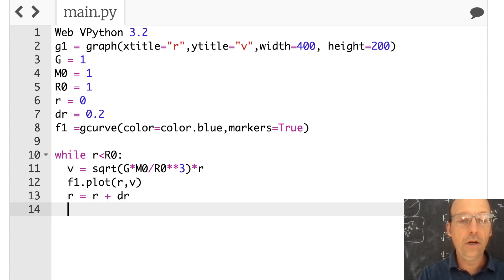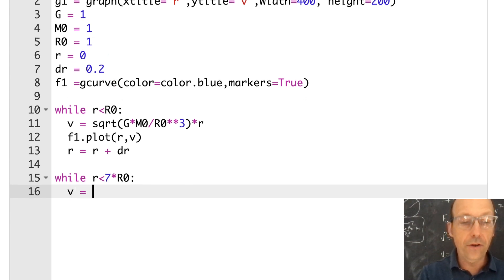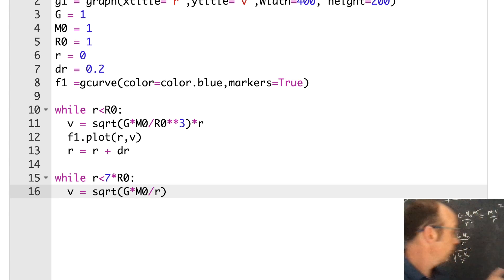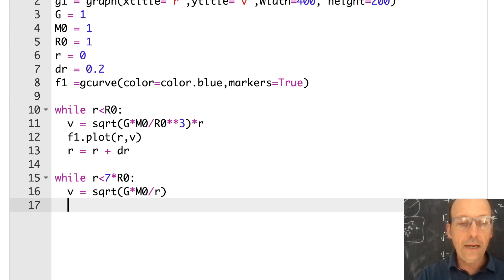Now let's do while r is less than, let's say, 7 times r0. And I'm going to do the same thing, except I have a new function for v, which is right here. Square root of G, square root G times m0 divided by r. That's right. And now I'm going to plot that, f1.plot, r, v. And I'm going to increase my value of r. r equals r plus dr. And that should be it. Let's just see what happens.